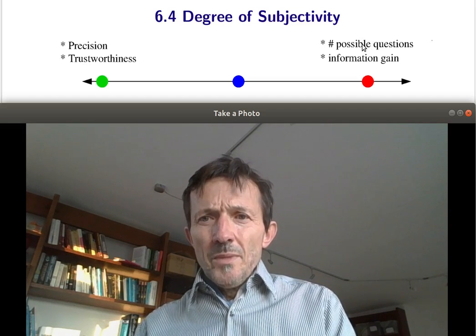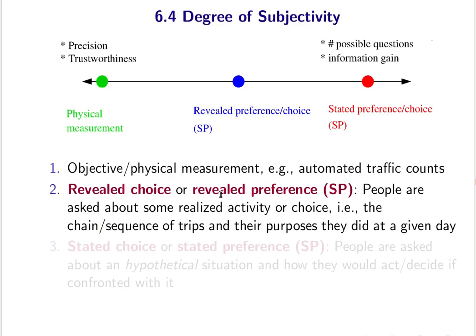There are three categories. The highest precision and trustworthiness comes from physical measurement, at least if you have calibrated your instrument. But that's not the core of this lecture, because typically you need to question persons, and since you cannot read minds, you need to do surveys. The automatic measurement would be a mind reader, which is not yet available.